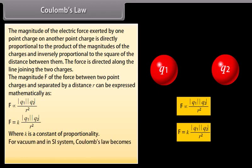For vacuum and in the SI system, Coulomb's law becomes F = (1 / 4πε₀) × |q1| × |q2| / r².